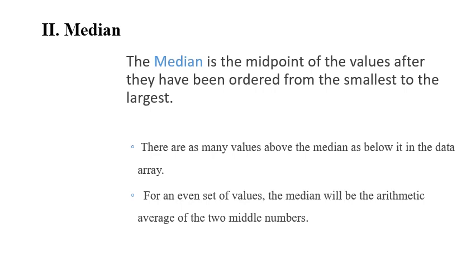We have another measure we call median. Median is the midpoint of the values after they have been ordered from the smallest to the largest. There are as many values above the median as below, which means the median divides data in the sample or observations in the sample into two equal small samples, and the point in the middle which represents the location is exactly the median.